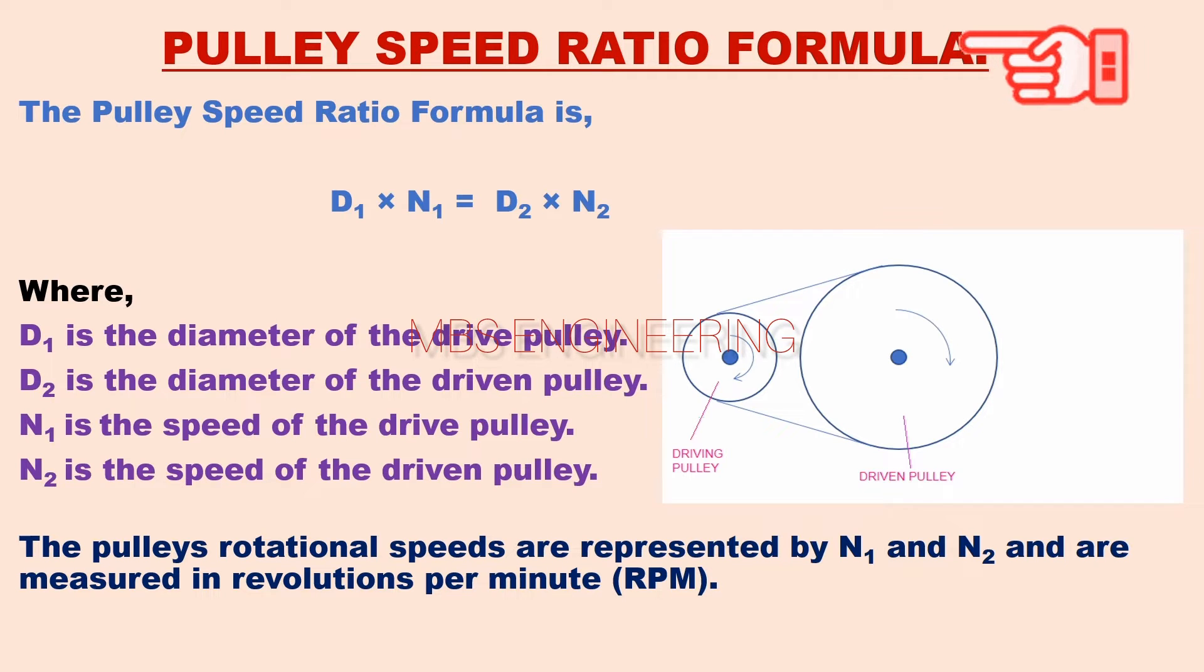First, let's learn about the pulley speed ratio formula. It is represented as D1 multiplied by N1 is equal to D2 multiplied by N2.